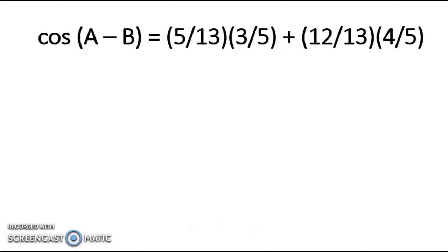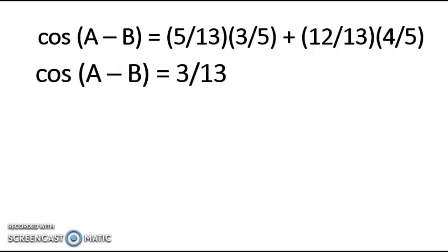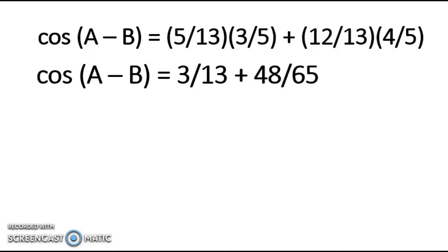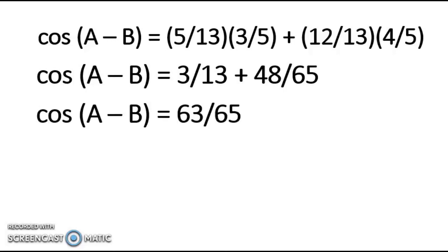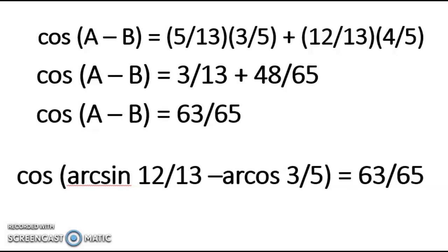Now we are going to perform the indicated operation. Cosine of A minus B equals 3 over 13, because 5 over 13 times 3 over 5 equals 3 over 13. And then 12 over 13 times 4 over 5 equals 48 over 65. Now, 3 over 13 plus 48 over 65 equals 63 over 65. So the expression cosine of arcsine 12 over 13 minus arcsine 3 over 5 equals 63 over 65.